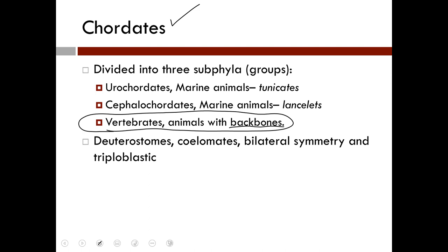Chordates are deuterostomes and coelomates with bilateral symmetry — that tube within a tube, completely lined body cavity — with three well-developed germ layers: the endoderm, ectoderm, and mesoderm. There are four shared derived characters that distinguish chordates from all other groups of animals. These characters, which evolved in connection with locomotion and attaining food, are: the notochord, the hollow dorsal tubular nerve cord, the post-anal tail, and the endostyle or thyroid gland — you may also hear these referred to as pharyngeal gill slits. On your lecture test — test three — you will be tasked with describing these.